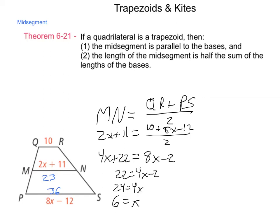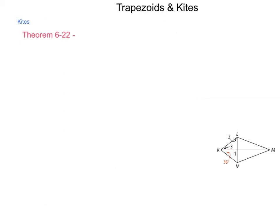Aside from trapezoids, we also get the special shape of kites. A kite, by definition, is a quadrilateral that has two sets of consecutive congruent sides and no sets of parallel sides — much like a kite that you would use to fly on a windy day.